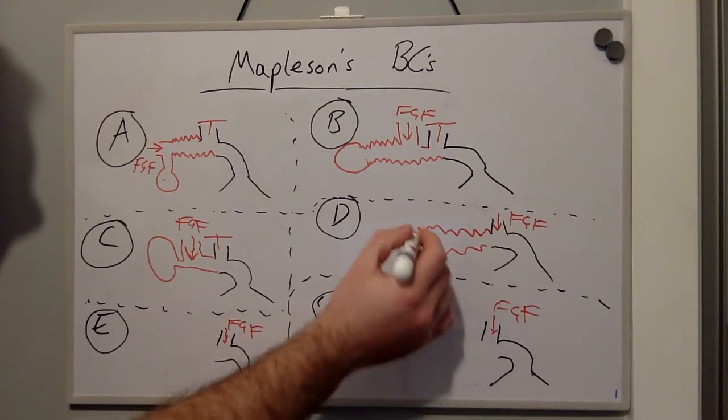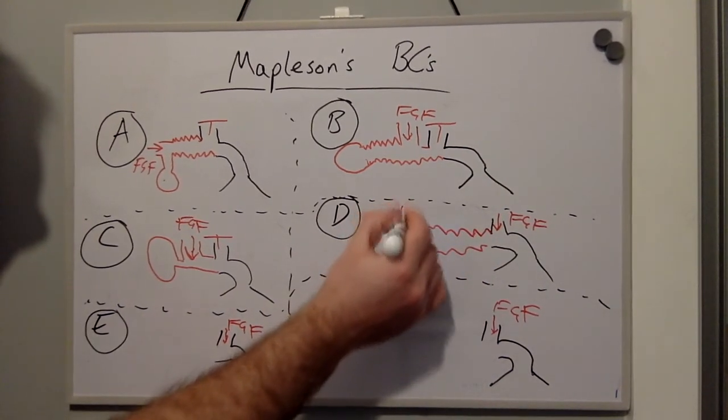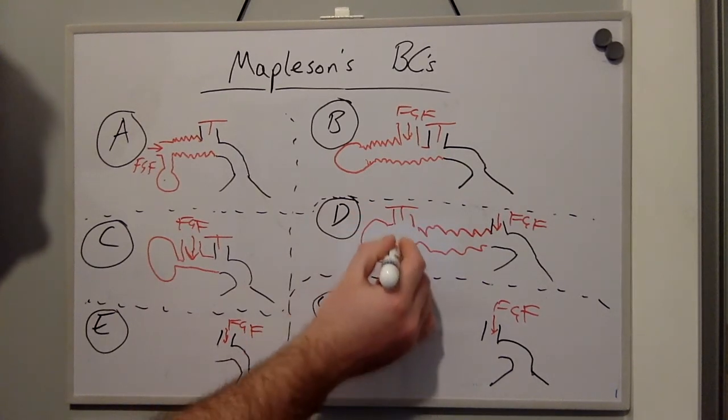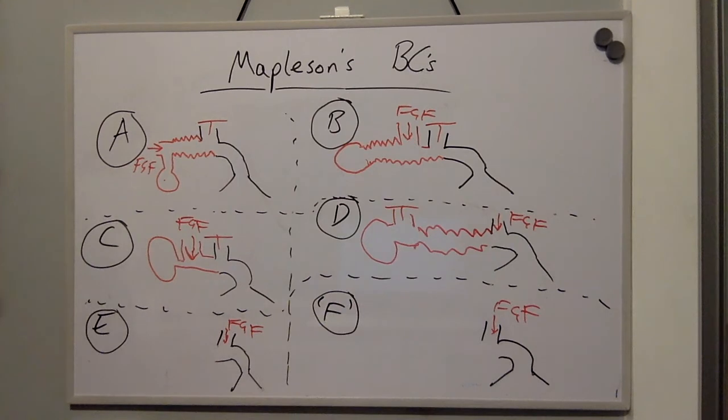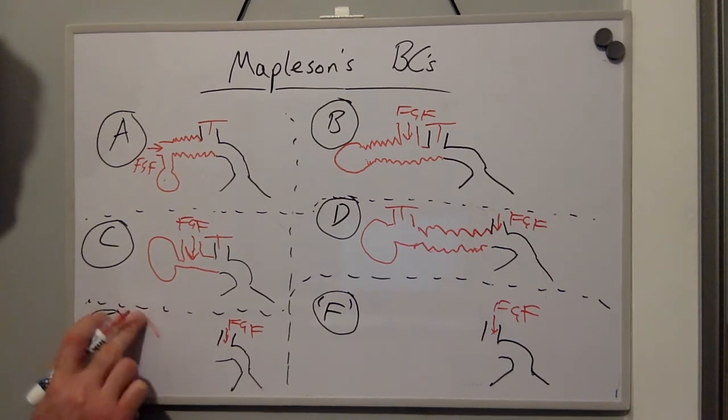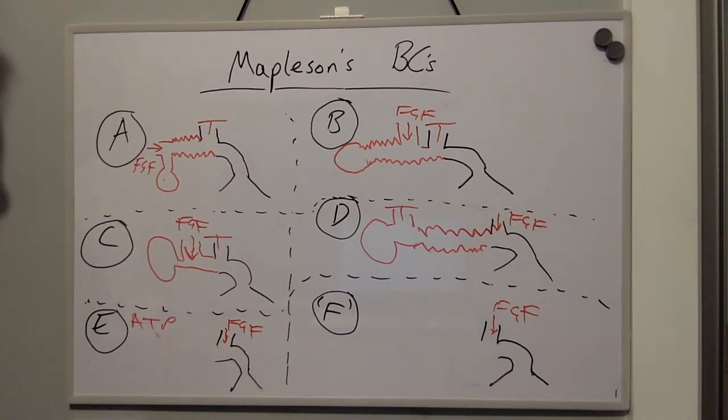Here's the long tubing. We then have the pressure control valve here and the reservoir bag. E is an Ayers T piece and it's commonly used in paediatrics because it provides little resistance to gas flow.